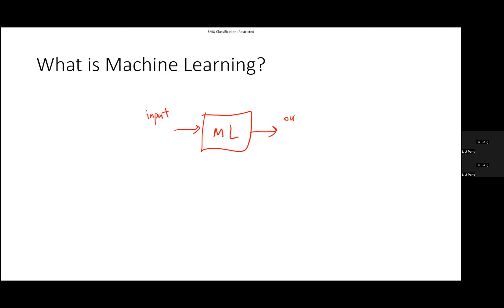And it outputs something. These outputs, in the context of machine learning, we would expect the model to predict something — this is also called prediction. We expect the model to give us some sort of prediction for the given input data. This piece is the black box, and we are going to train the algorithm inside the black box so that it performs well in terms of the current prediction task.